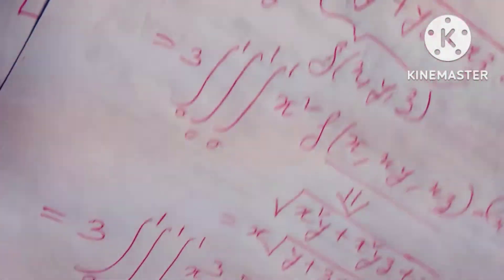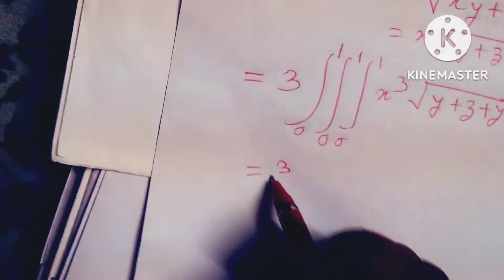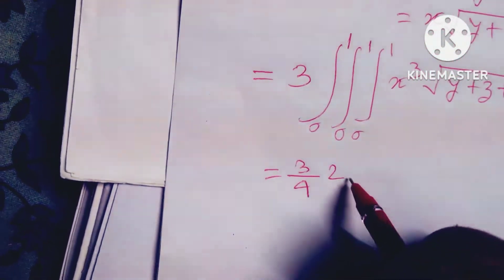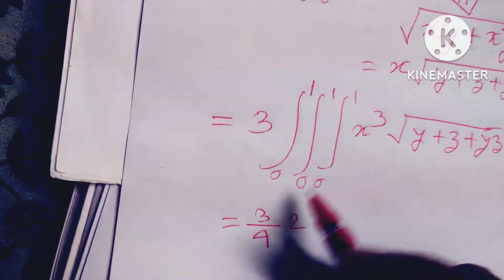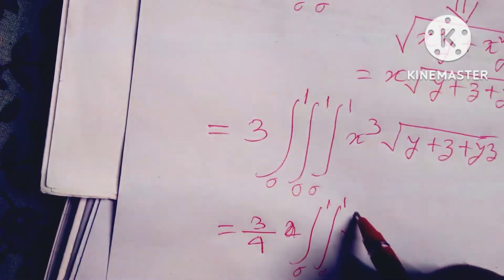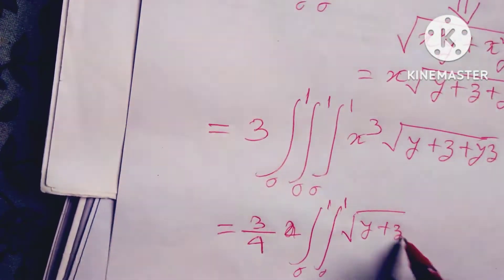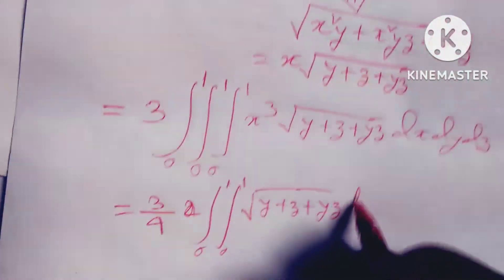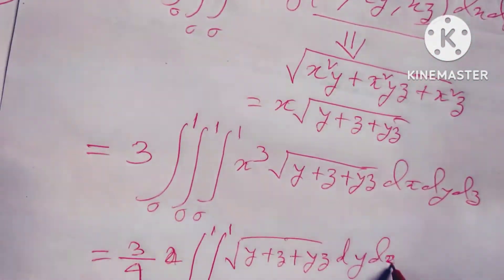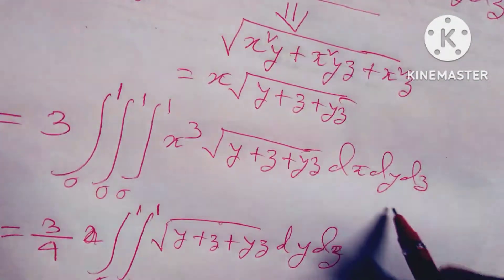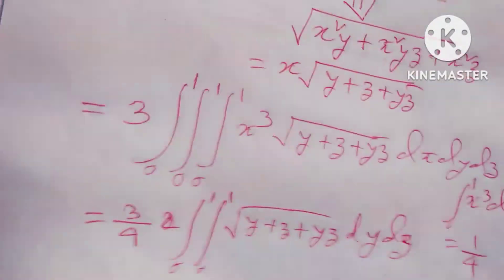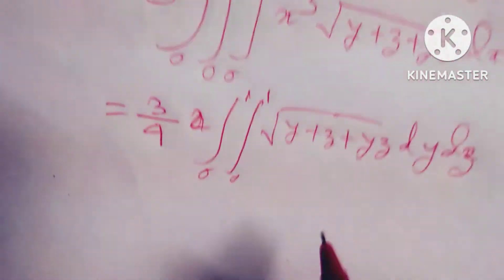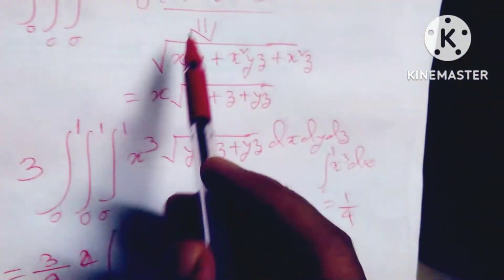This can be written as 3 times (1/4) into the double integral from 0 to 1, 0 to 1 of root over (y + z + yz) dy dz, since the integral of x³ from 0 to 1 equals 1/4. So this is the main factor.